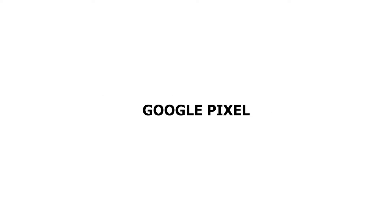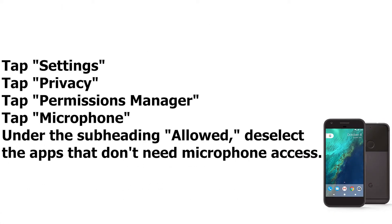Google Pixel: for apps that use the mic, Tap Settings. Tap Privacy. Tap Permissions Manager, then Tap Microphone. Under the subheading Allowed, deselect the apps that don't need microphone access.